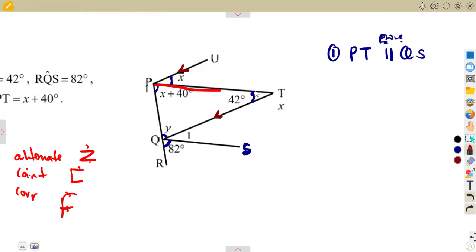We are focusing on line PT and line QS. Is there any angle that we can calculate or that we can have? We are given that these two lines are parallel. So it follows that angle X is equal to 42 degrees. We are forming a Z, alternate angles. So X is equal to 42 degrees from alternate angles.